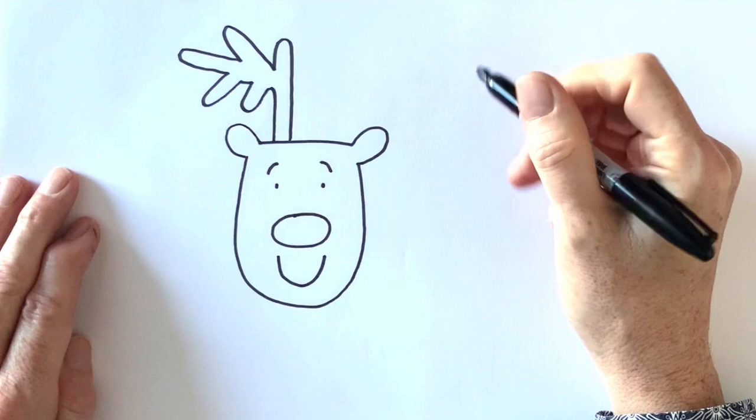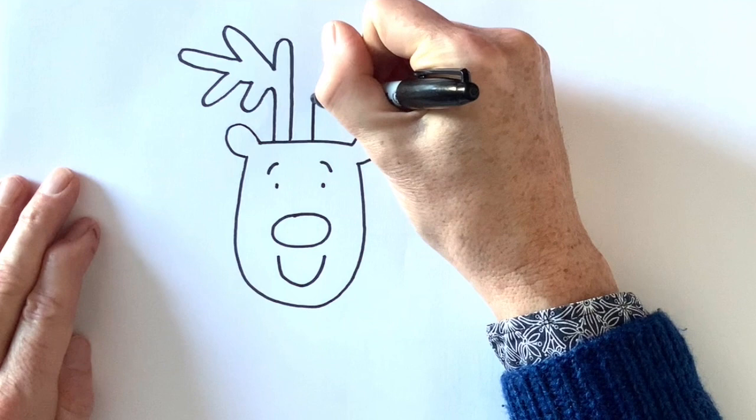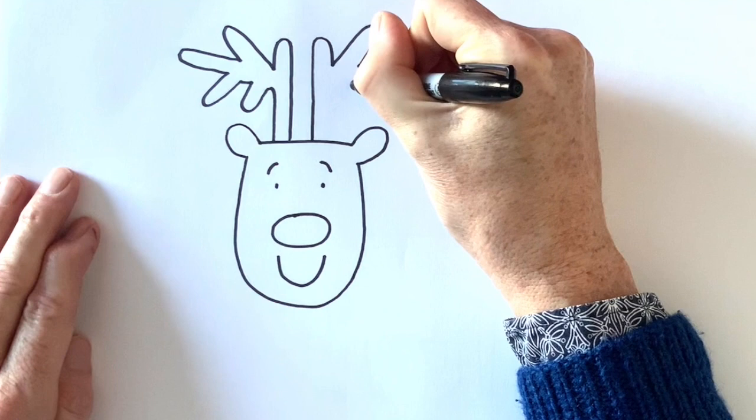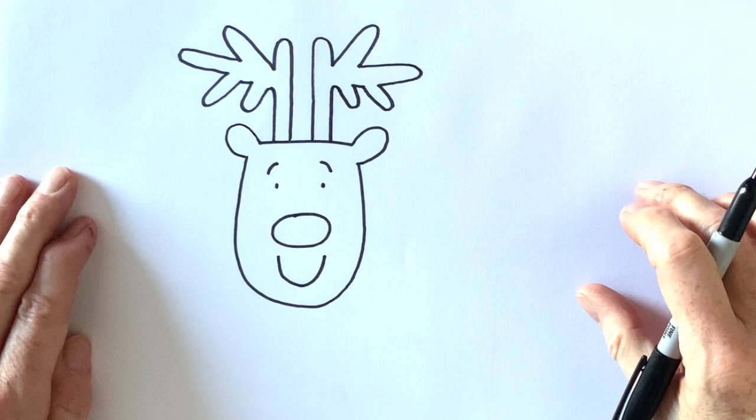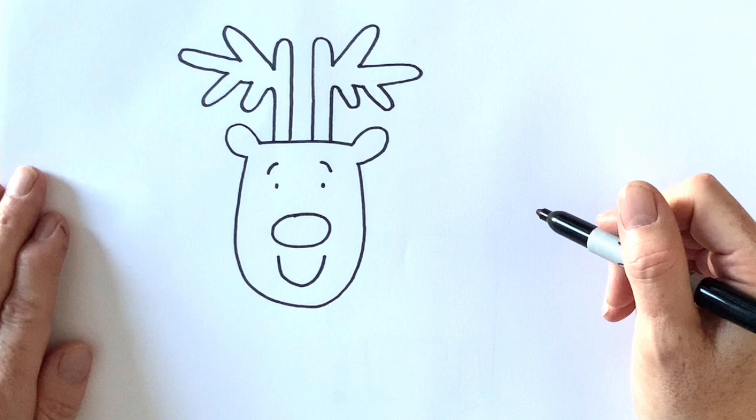Then I'm going to try and draw another antler on the other side. And what I'm going to do is try and make it a very similar shape to the one on the left. So I'm going to try and make the branches stick in the same places. It's quite tricky, but have a go and see if you can make your antlers symmetrical. So they're almost symmetrical, aren't they? Not too bad.